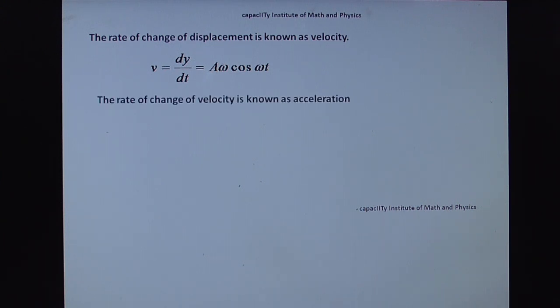Now what is acceleration? The rate of change of velocity is known as acceleration. So A is equal to dV by dt. That is, cos omega T is minus sine omega T. Omega T differentiation omega. Therefore, omega into omega is omega squared.